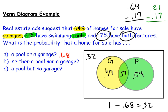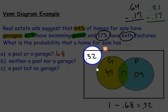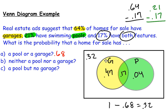The second question: what's the probability that a home has neither a pool nor a garage? Since I set up the Venn diagram, I can see that probability is 0.32 — 32% of homes have neither. The third question: what's the probability of a pool but no garage? I look at the green circle, excluding the overlap, and the answer is right there: 0.04.